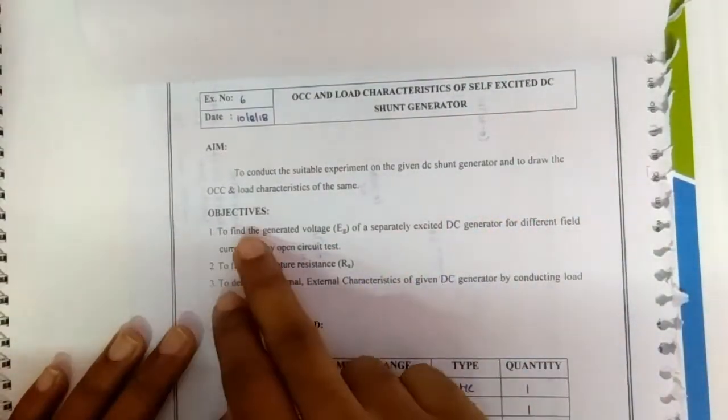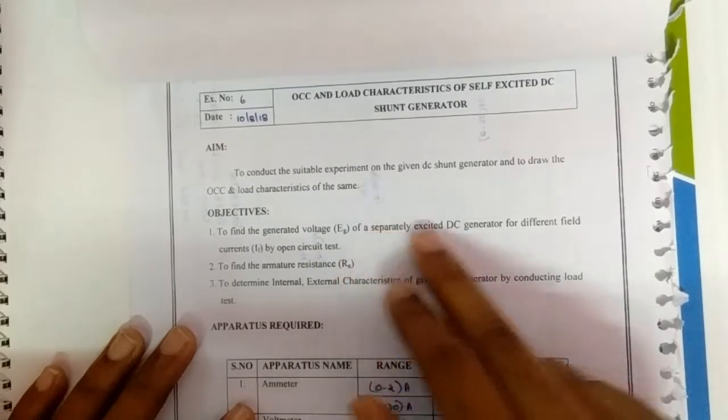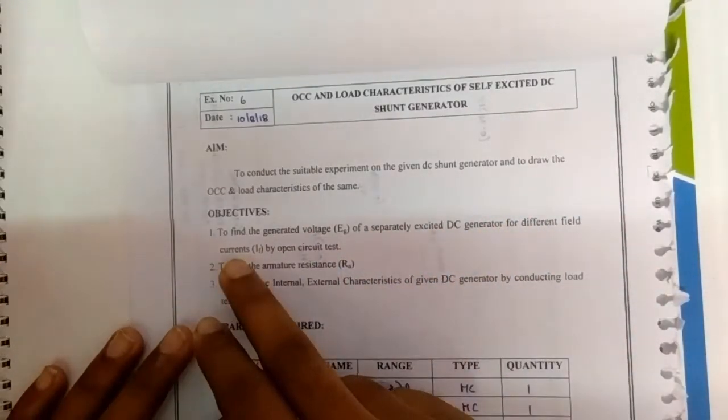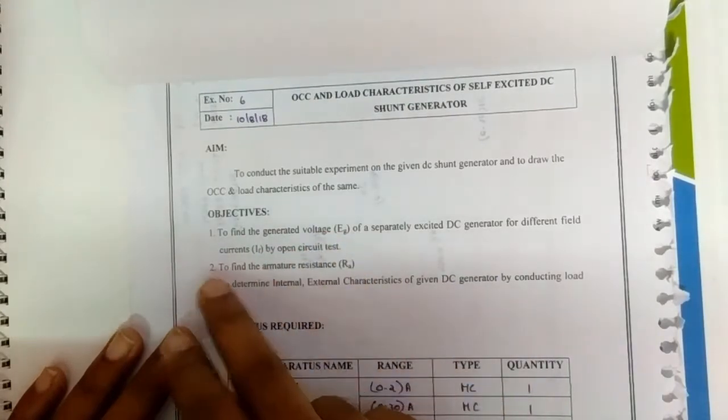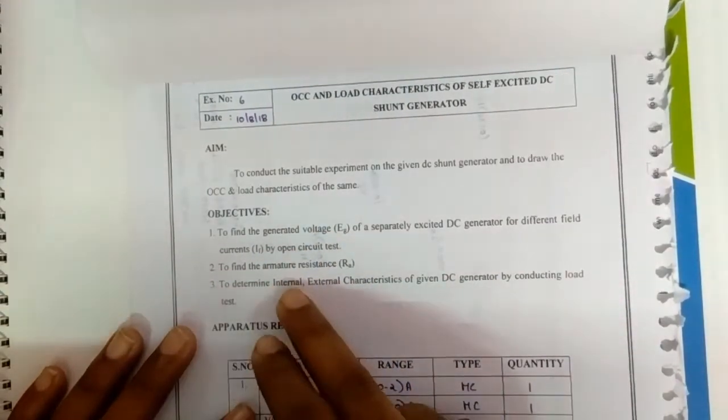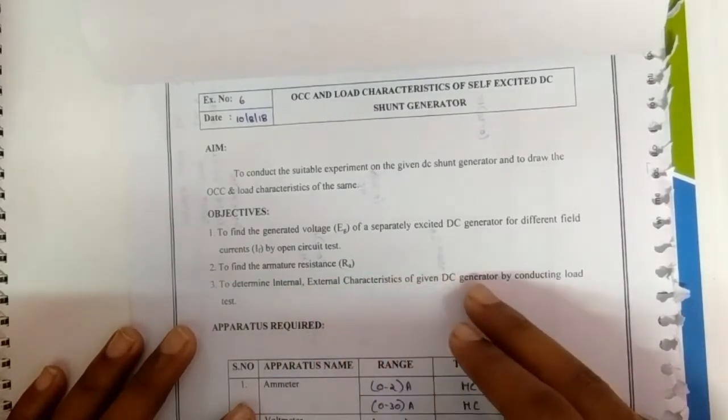The objective of this experiment is to find the generated voltage of a separately excited DC generator from different field currents by open circuit test, to find the armature resistance, and finally to determine internal and external characteristics of the DC generator by conducting load test.